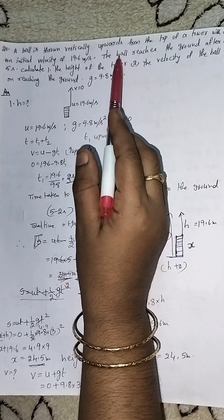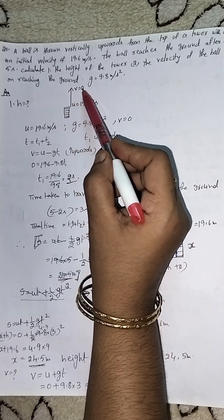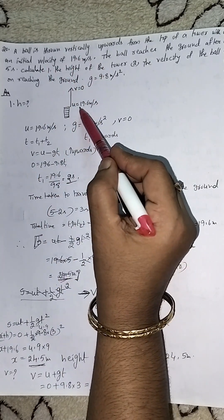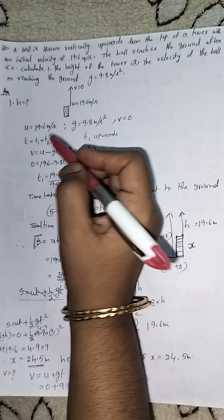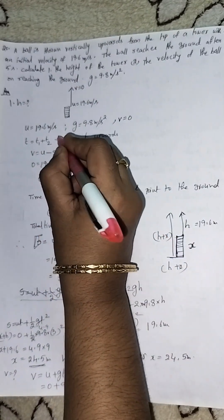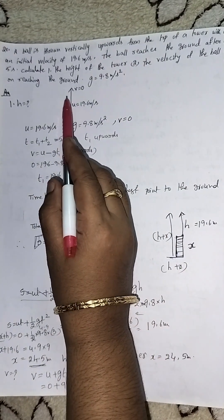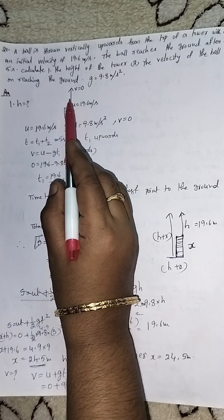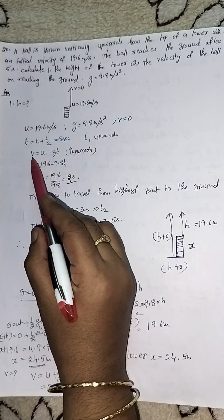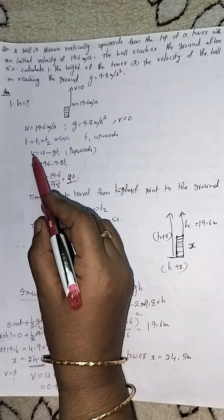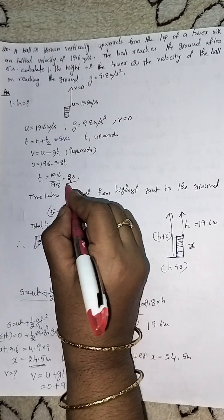A ball is thrown vertically upwards from the tower. At the top, V equals 0. The initial velocity U is 19.6 m/s. The ball reaches the ground after 5 seconds, so T equals 5 seconds, meaning T1 plus T2 equals 5 seconds. We find T1 first, then H. Since it's the opposite direction, we use V = U − gT1. So 0 = 19.6 − 9.8 × T1.